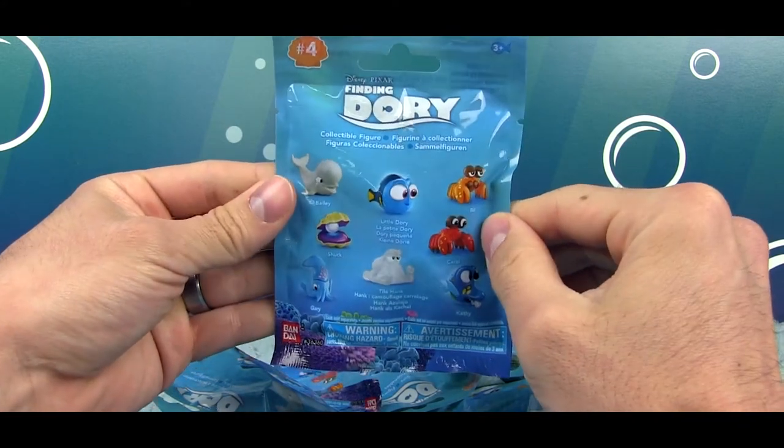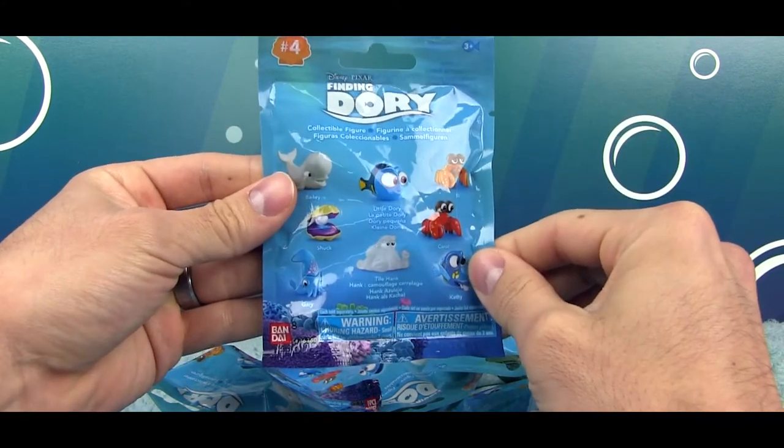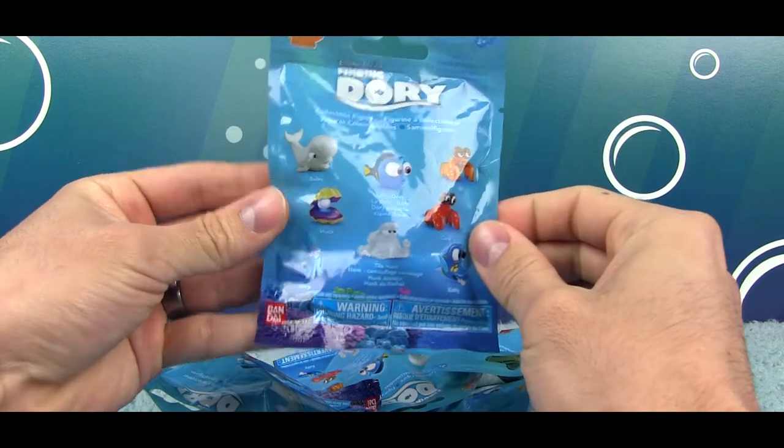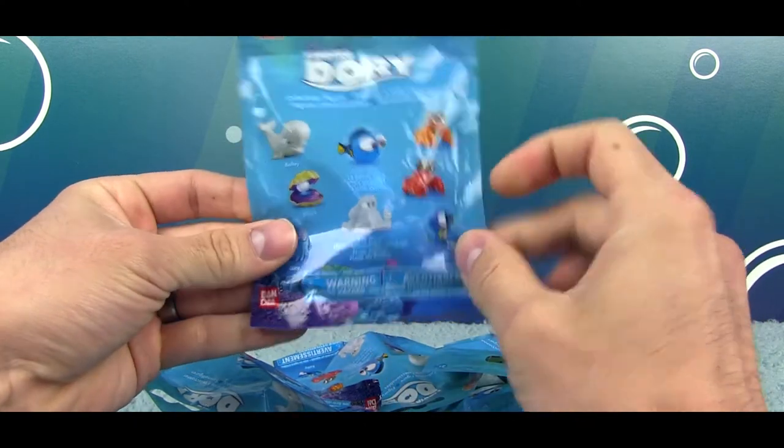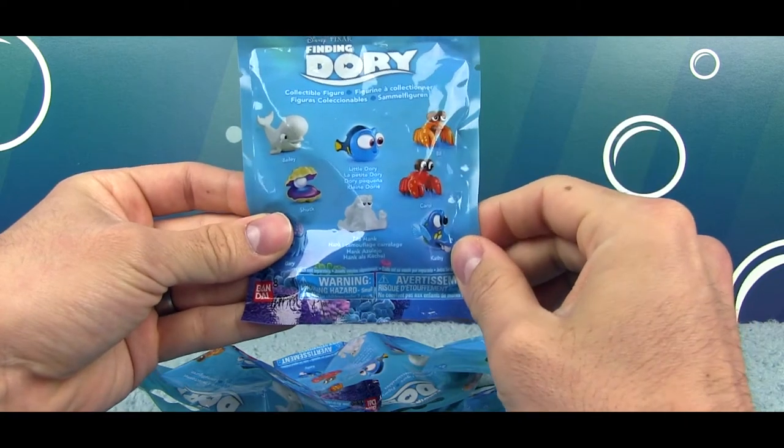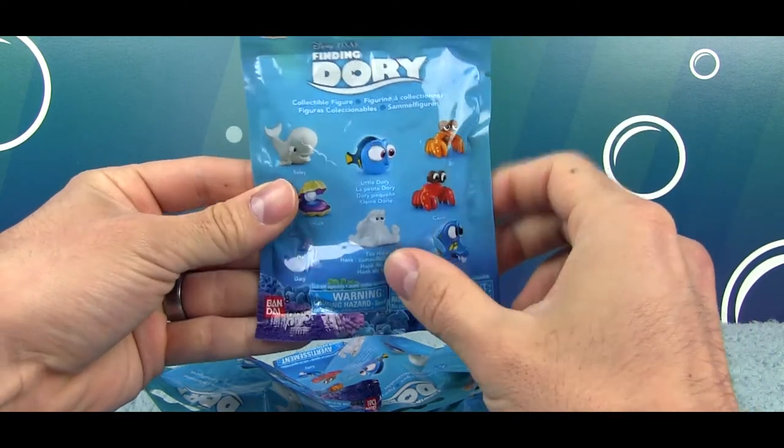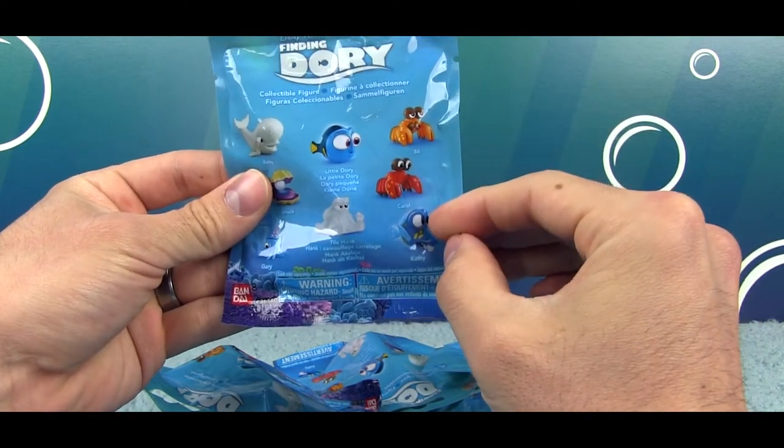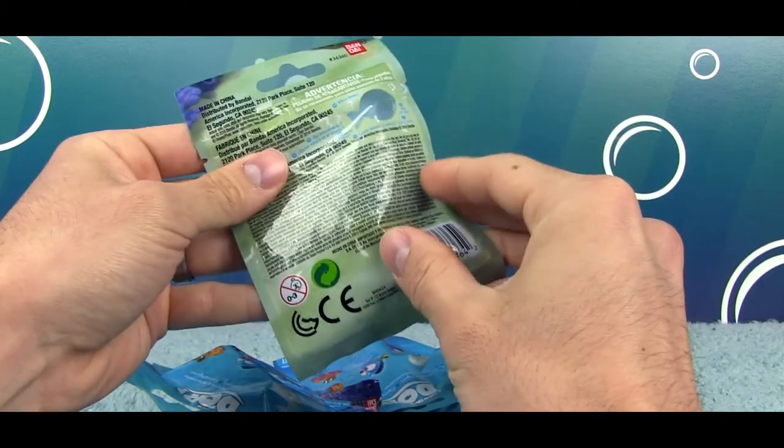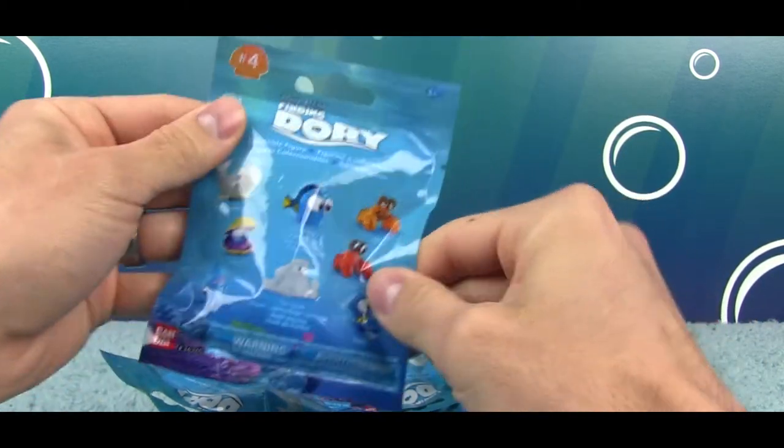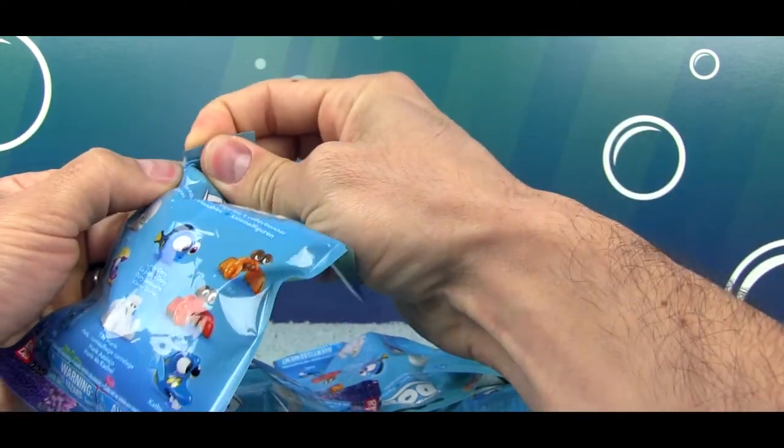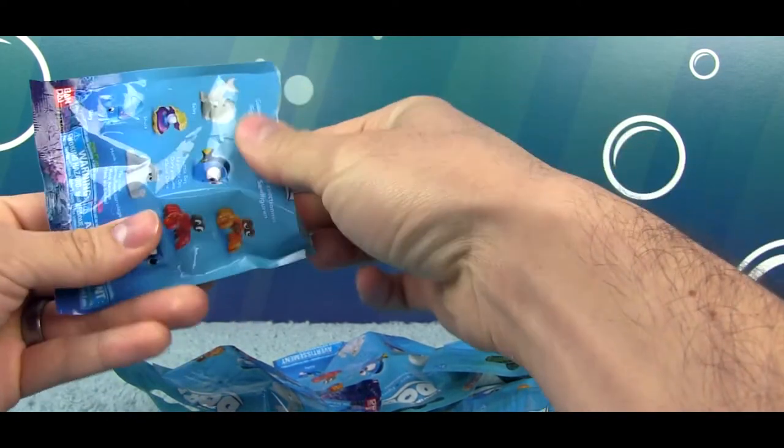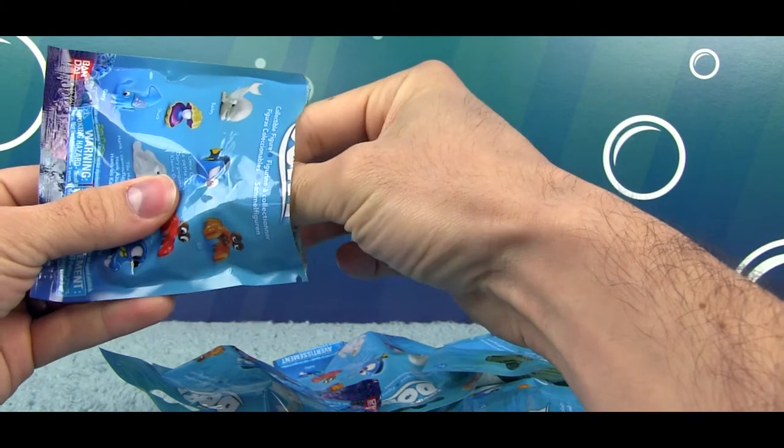This series has, like usual, eight new characters. This time around we have Bailey, Shuck the clam, Gary the squid, Tile Hank which is like a white almost translucent Hank, Baby Dory or they call her little Dory here, Bill, Carol, and Kathy. So we're going to go ahead and start opening these up. And if you're new here to my channel, thank you so much for stopping by. Be sure to subscribe and hit that bell icon so you can stay up to date on my latest videos.